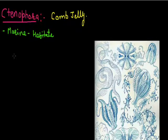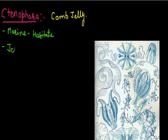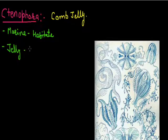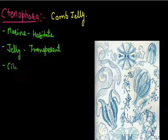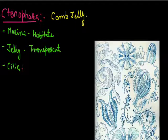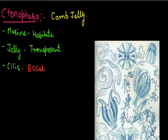These animals are transparent, so we call them jelly. They have a jelly-like structure because they have a transparent body. These animals have comb plates on their body — ciliated comb plates. Cilia are structures used by living beings for locomotion, and in these animals cilia are present in plate form. Eight ciliated plates are present in these animals, so we call them comb jellies.